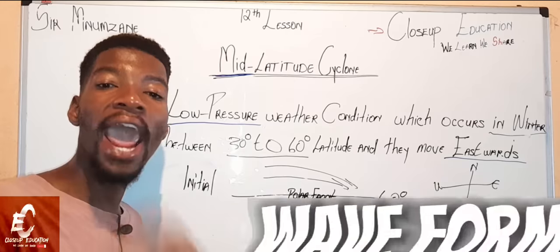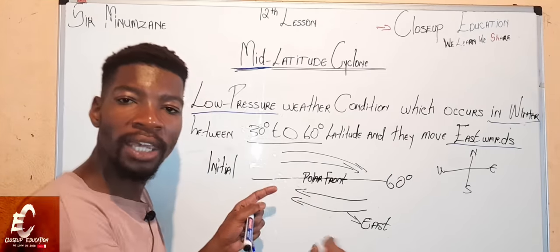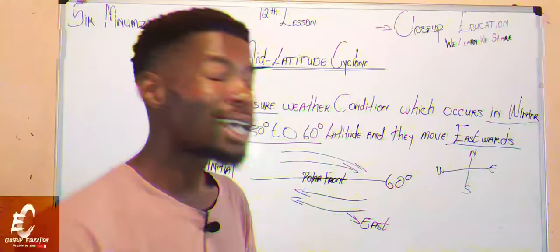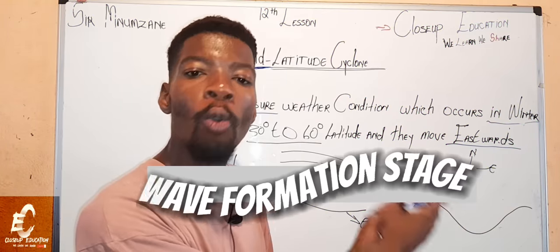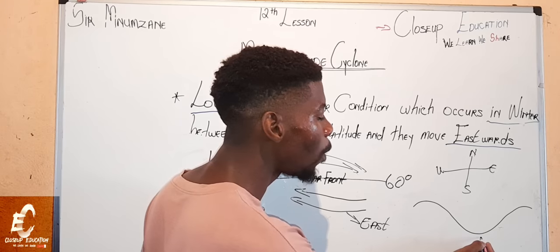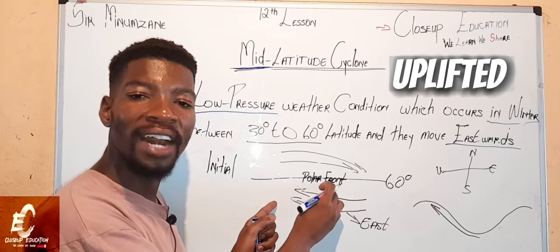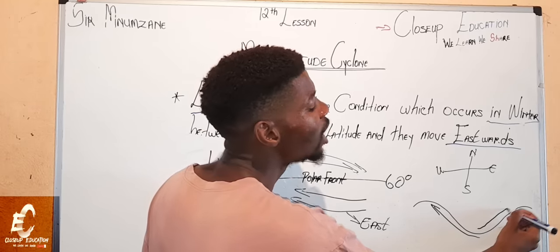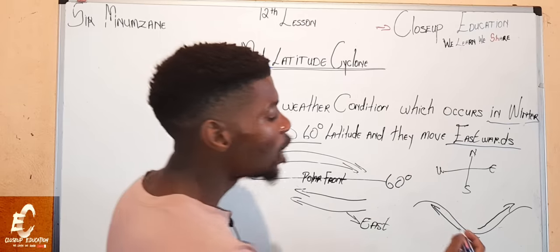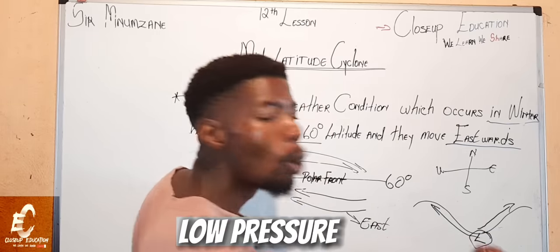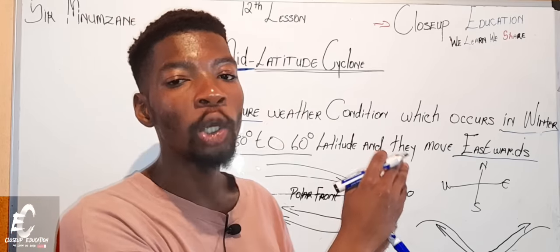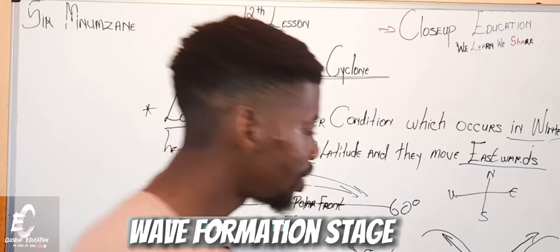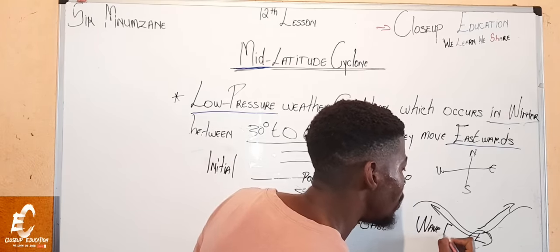The second stage is called the wave formation stage. As the easterlies move further north and the westerlies move further south, it creates a wave-like shape. This is because the polar easterlies have uplifted the polar front and the warm air underneath, causing it to rise sharply and speedily. In this area, we will now have a low pressure. Every mid-latitude cyclone will always have a low pressure. This is the wave formation stage.